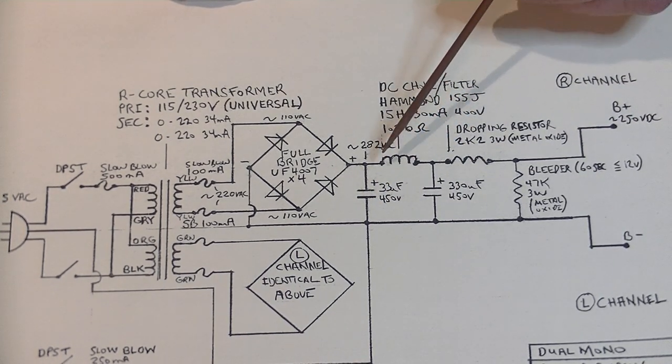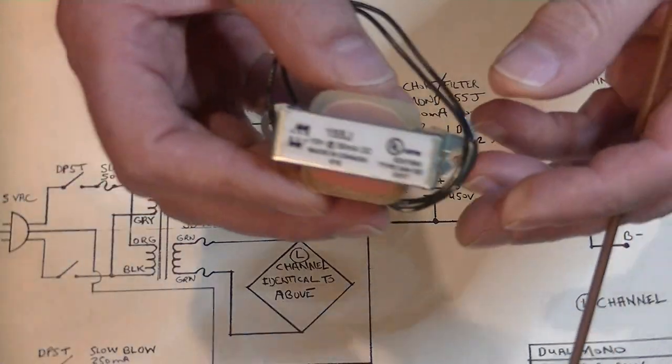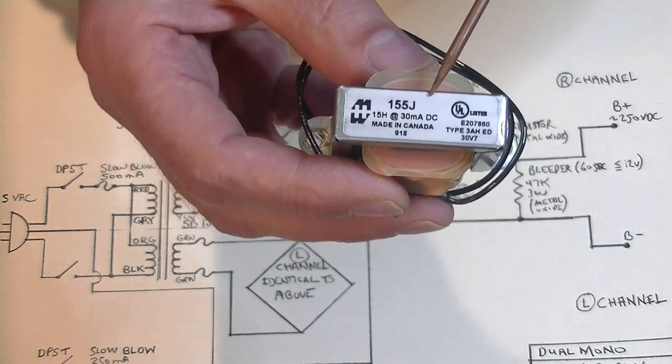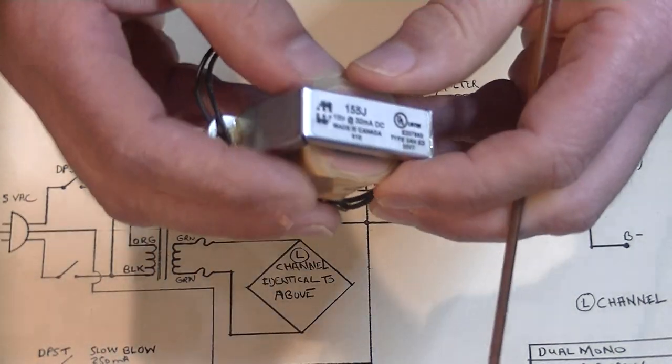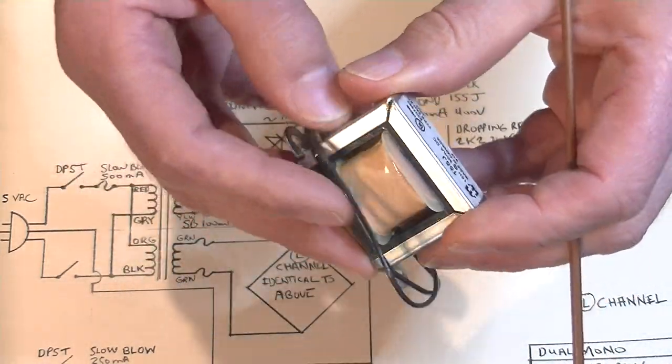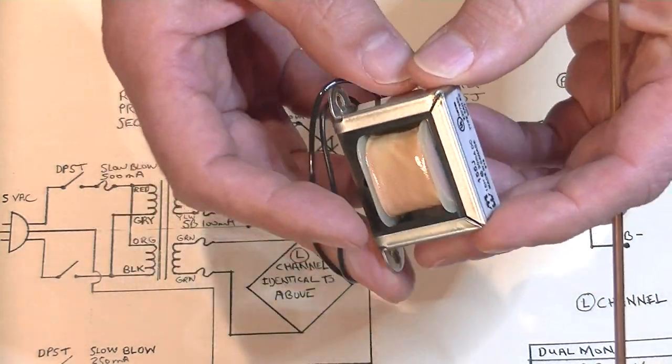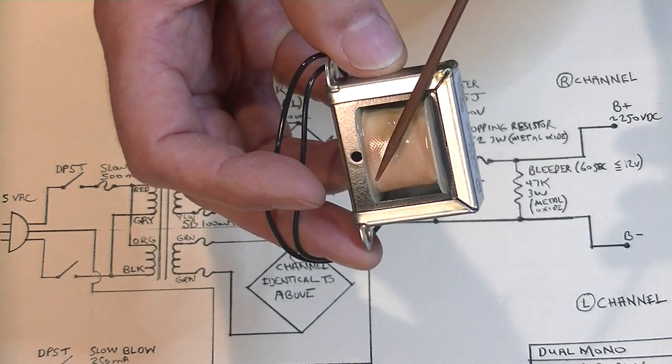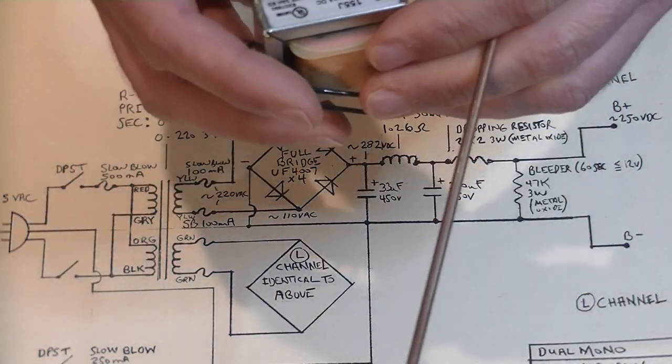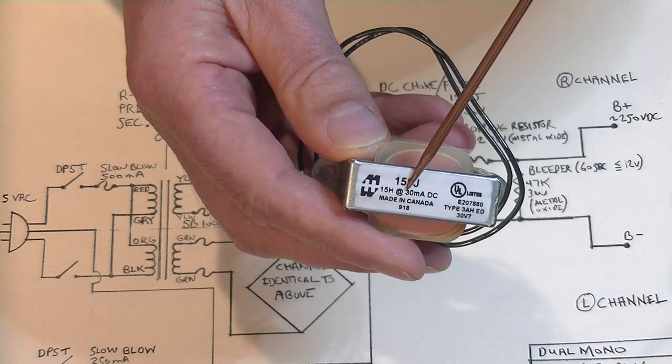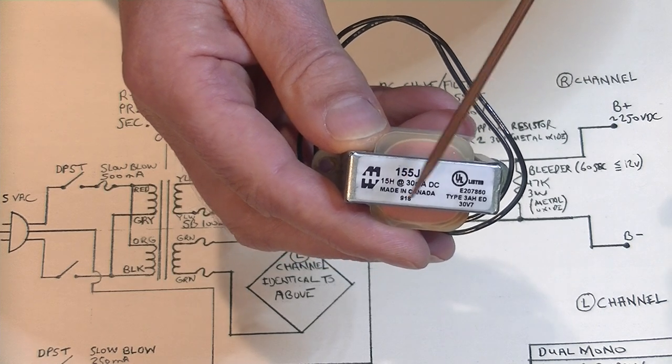So the first filter is a 33 microfarad, 450 volt electrolytic capacitor. Now, electrolytics have to be oriented properly. So the plus side goes to the B plus rail, the positive rail. The negative side goes to ground. Next, we've got a DC choke or a DC filter. That's how they're shown. I've got one right here that I used in the build. This is a 15 Henry, 30 milliamp DC, 400 volt. And all this is is a coil of coated copper wire around the core. One wire in, one wire out. It creates a little bit of resistance. And as a result of the winding, it cleans up the DC nicely.